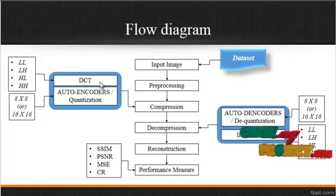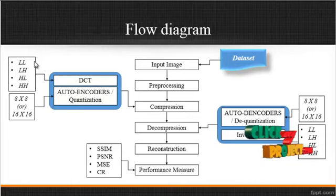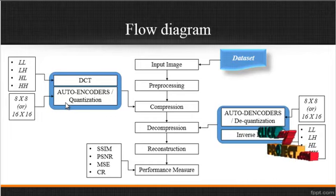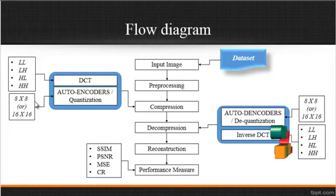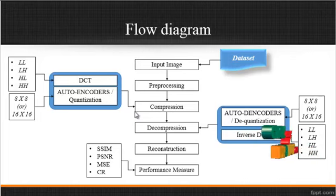The first step is the DCT — discrete cosine transform — where the image is subdivided into sub-bands. After the sub-band calculations, auto-encoders with auto-quantization are applied. In this step, the image is split into 8×8 patches or 16×16 patches. Using these techniques, the image is compressed into one aspect ratio.